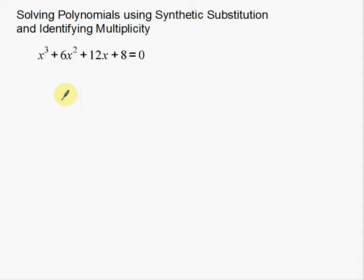In this example, I'll show you that you actually cannot use factoring to solve this. Instead, we're going to use synthetic substitution. Here's the situation — you're trying to solve this polynomial, set equal to zero. Now, your first instinct, since you're solving polynomial equations, is to always try to factor by grouping.